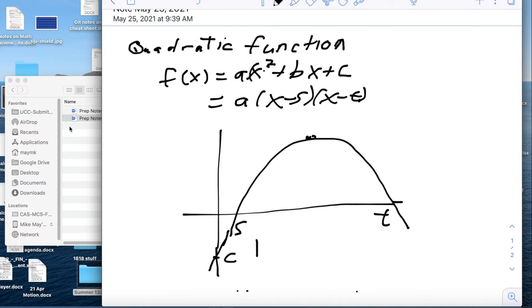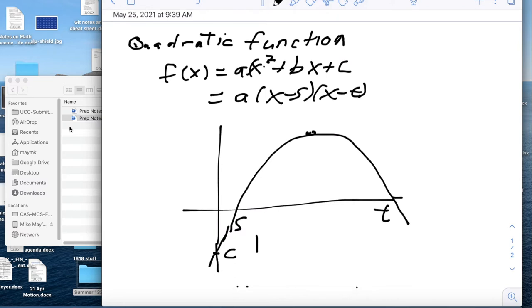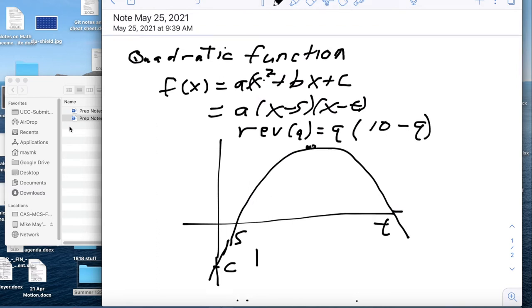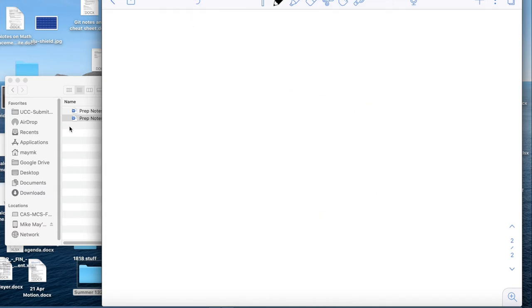The place that this will show up most, or most commonly, is something like revenue or profit, because I have revenue of q is q, something like 10 minus q times demand price. Demand price that has a negative slope, and so this would be something like revenue. A shifted version of it would be profit. So quadratic functions will show up often when we're talking about revenue or profit.